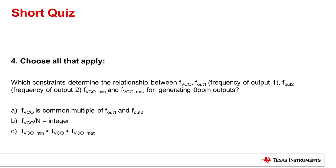Choose all that apply. Which constraints determine the relationship between VCO frequency, frequency of output 1, frequency of output 2, minimum VCO frequency, and maximum VCO frequency for generating 0 ppm outputs?